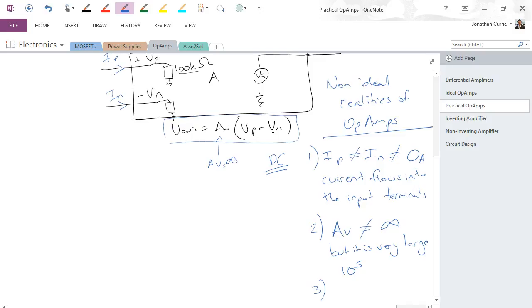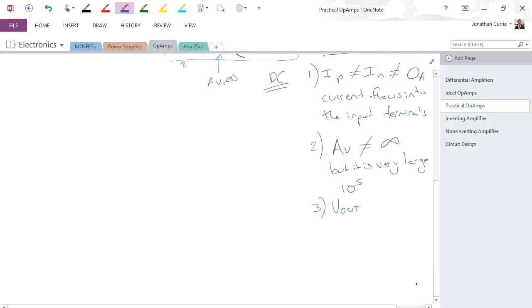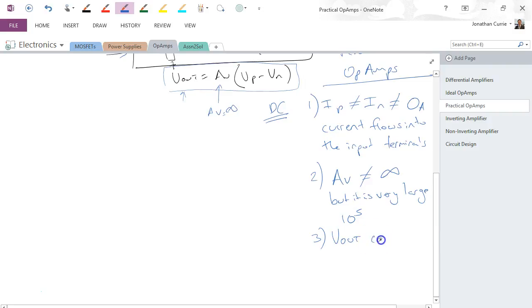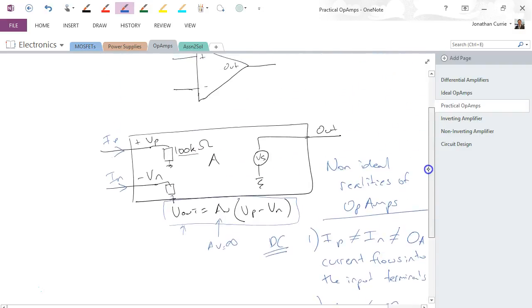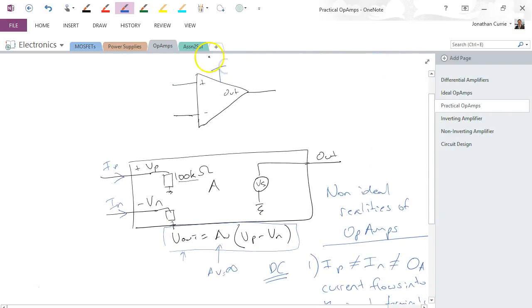Now, that infers that if that gain there is 10 to the 5, and for example the voltage difference was 1 volt, then the output voltage here would be 10 to the 5 volts. Straight away we should know that Vout cannot be 10 to the 5 volts, or else it's quite a remarkable circuit. So Vout cannot exceed the supply rails. Now in this particular diagram, we don't see that, but if we bring back up to here, VCC and VEE.